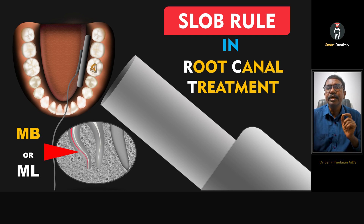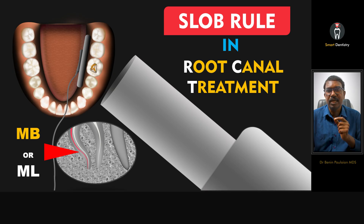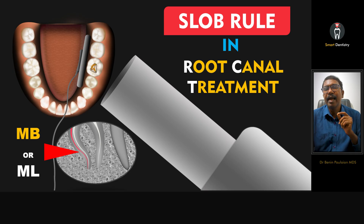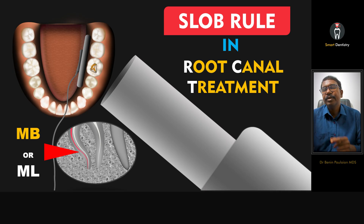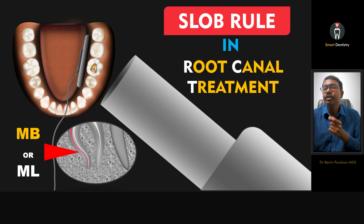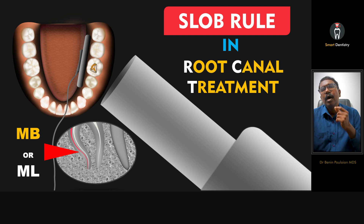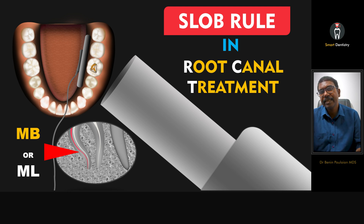Let's consider that we are doing root canal treatment for a mandibular left first molar. In the mesial root of the mandibular first molar there are two canals: the mesio-buccal and the mesio-lingual. We are taking a master cone radiograph, and imagine that one of the master cones has gone beyond the apex and the other is at the tip. How are we going to differentiate whether the cone which has gone beyond the apex is mesio-buccal or mesio-lingual?